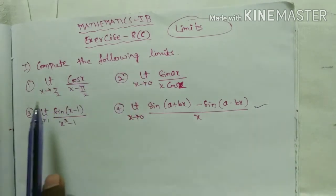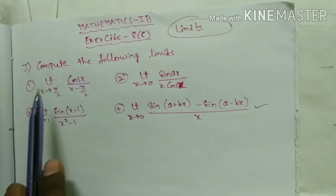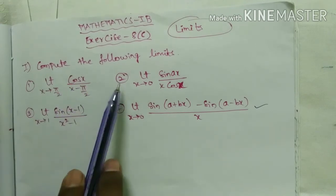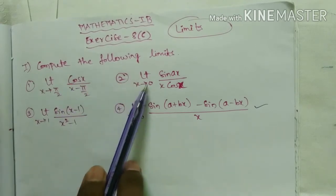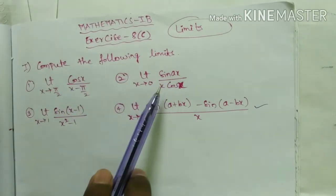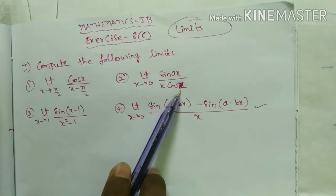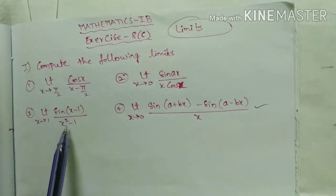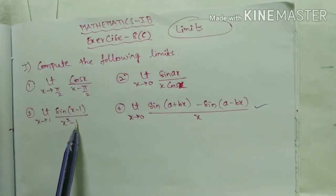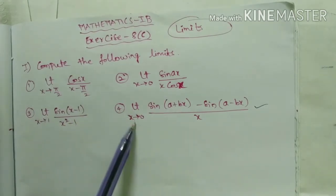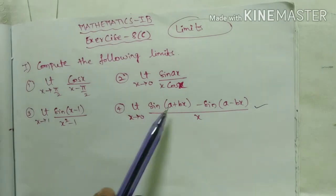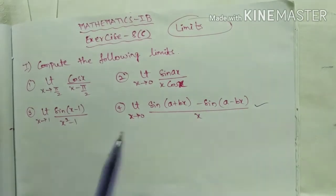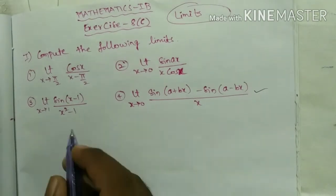Compute the following limits. Number one: limit x tends to π/2 of cos x / (x − π/2). Second: limit x tends to 0 of sin(ax) / (x cos x). Third: limit x tends to 1 of sin(x − 1) / (x² − 1). Fourth: limit x tends to 0 of [sin(a + bx) − sin(a − bx)] / x.